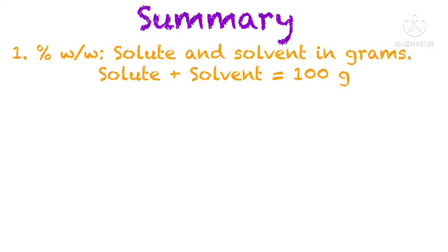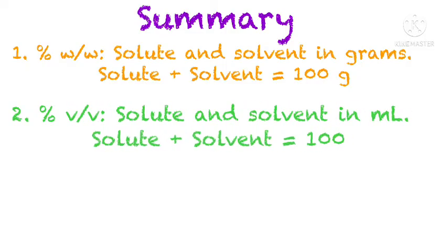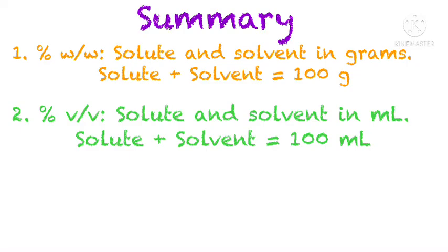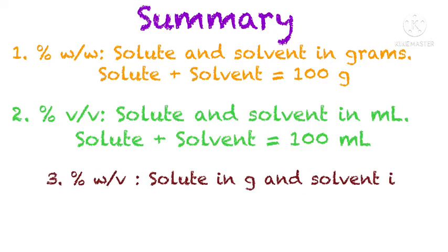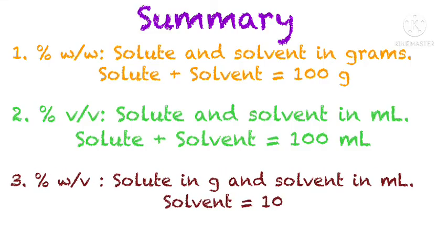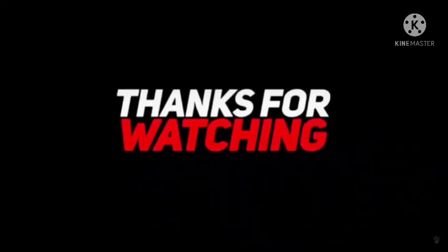In summary: in percent weight by weight (% w/w), solute and solvent are both measured in grams and their combined weight equals 100 grams. In percent volume by volume (% v/v), both are measured in ml and total 100 ml. In percent weight by volume (% w/v), solute is in grams and solvent is in ml, with the total solvent volume being 100 ml.